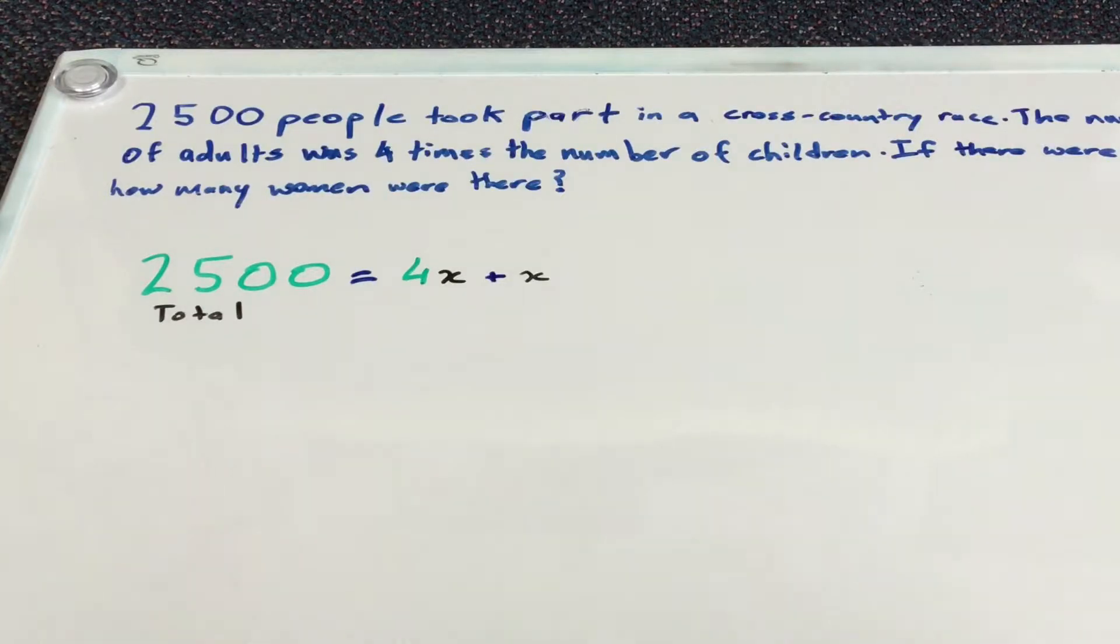So what does our question tell us? The question tells us that there are 2,500 people that took part in the cross-country race. The number of adults was four times the number of children. So if there were 1,200 men, how many women were there?